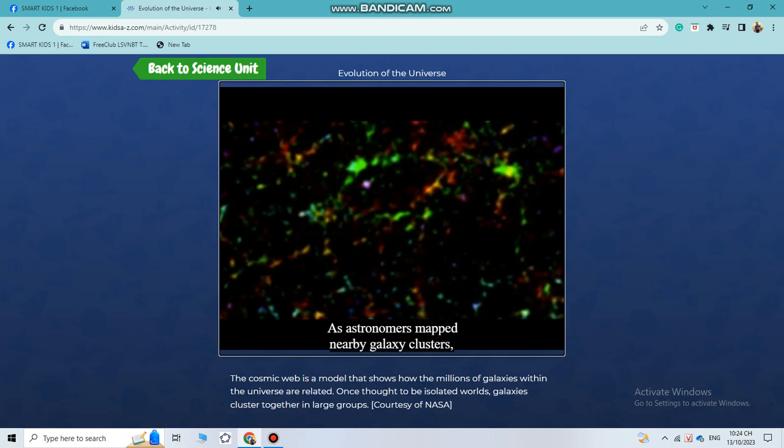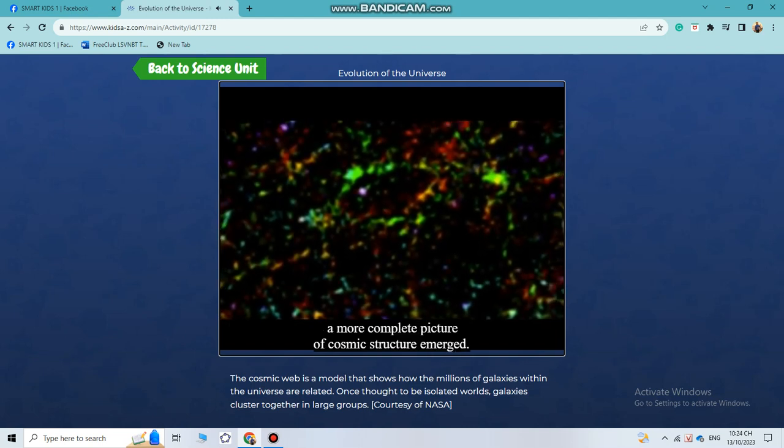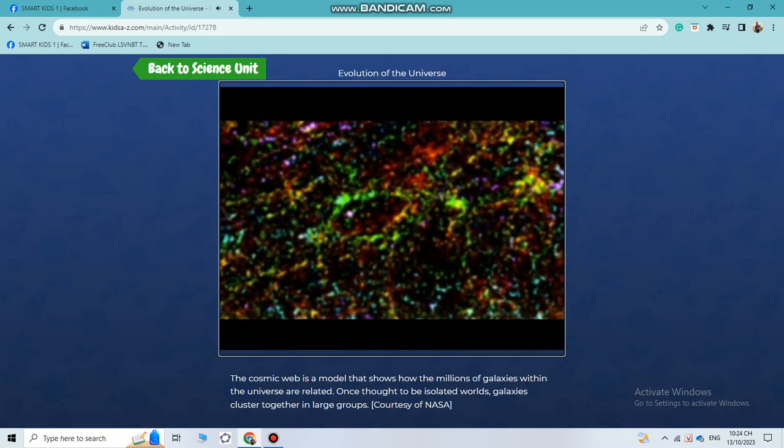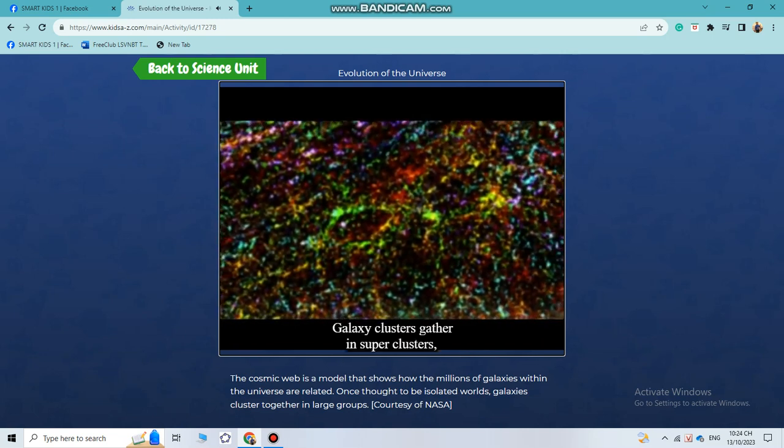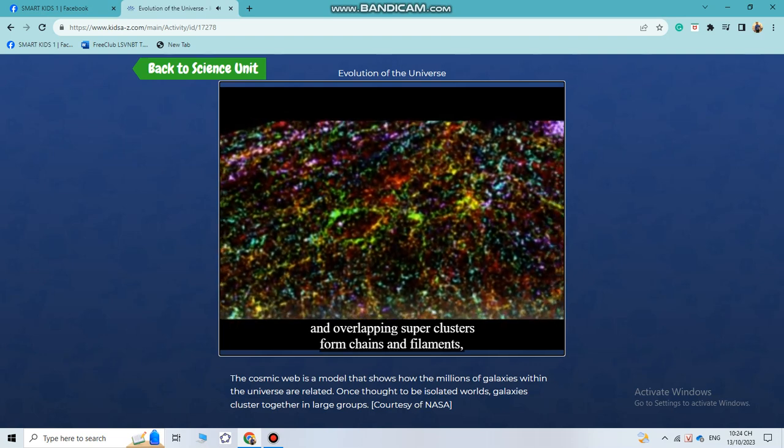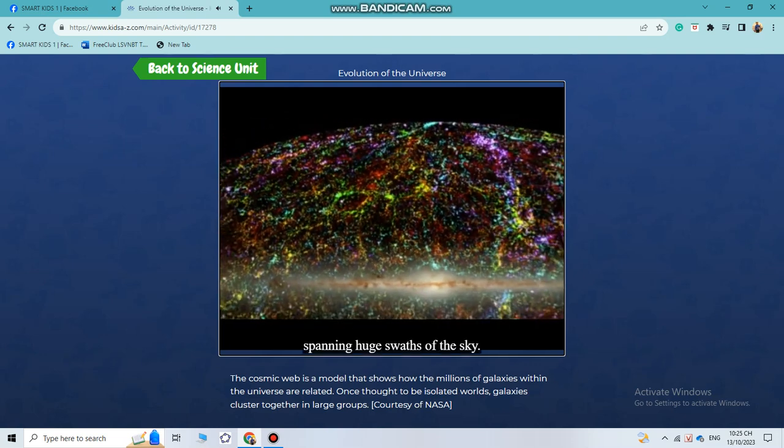As astronomers mapped nearby galaxy clusters, a more complete picture of cosmic structure emerged. Galaxy clusters gather in super-clusters, and overlapping super-clusters form chains and filaments spanning huge swaths of the sky.